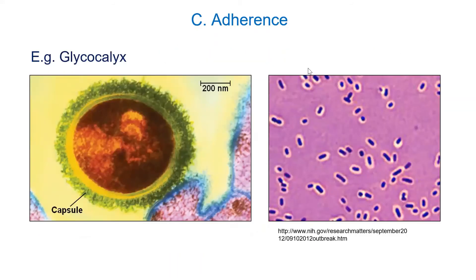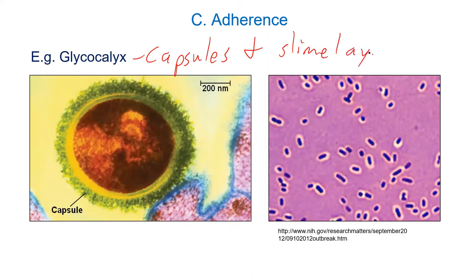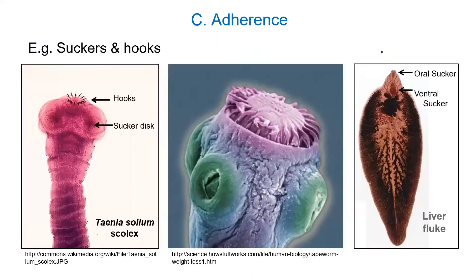Capsules and slime layers are sticky carbohydrates that also help organisms evade the immune system. One image shows Streptococcus actually attaching to a tonsil cell, causing strep throat. Helminths — worms — have all sorts of suckers and hooks, like suction cups with little barbs on them. When they can no longer hold on due to certain drugs, they get released — that's one way to deal with these things.